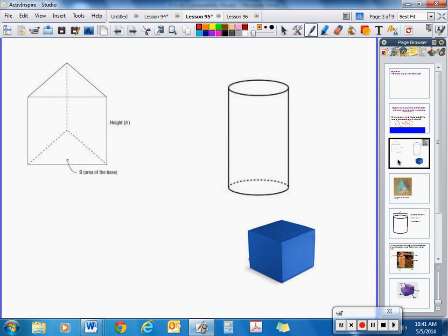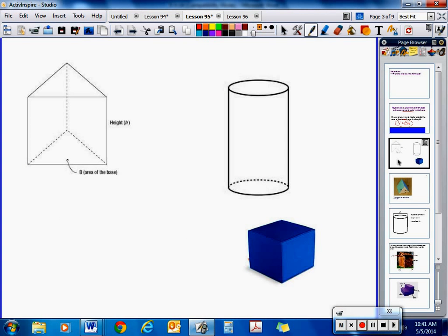Here are just some examples of some right solids. Here you have a triangular prism. We have a triangle as this base, a triangle as the top base, and you have a 90 degree angle here between the sides and the bases. Same thing here. You have the two circles and then the height is at a 90 degree angle of the base. Same thing with a cube. So these are all examples of right solids.